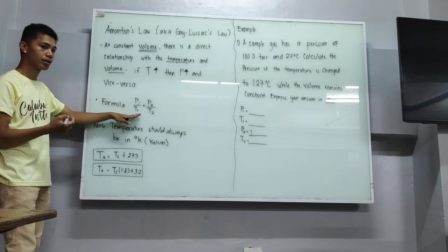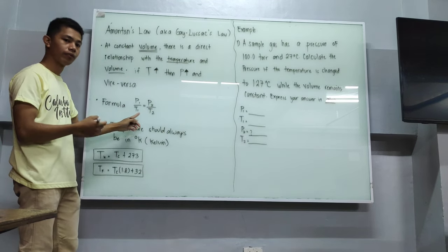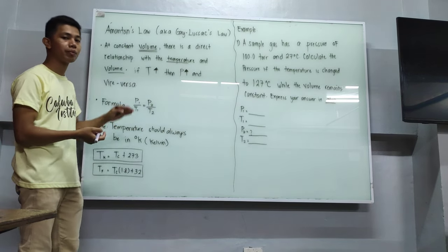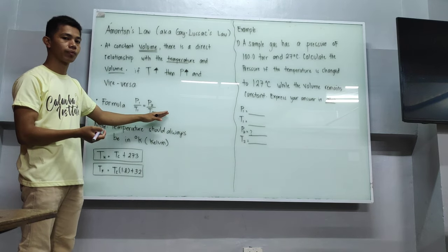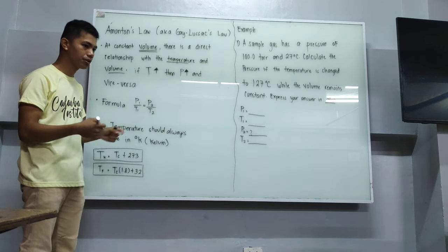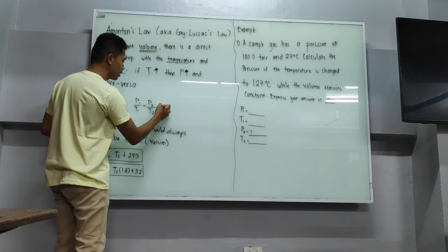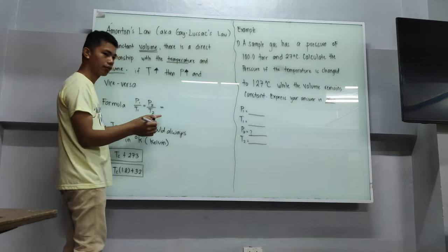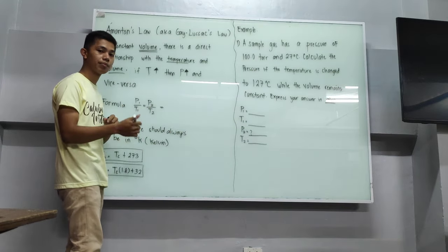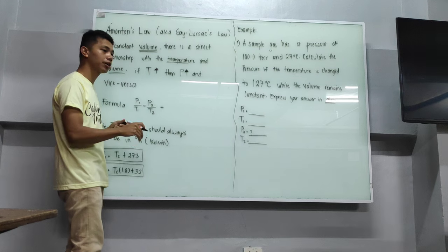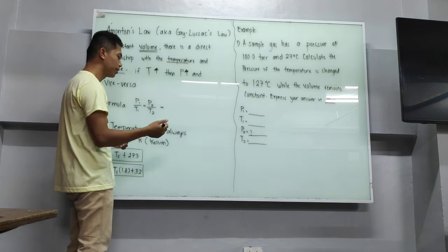So the formula that we will be using in Amontons' Law is P1 over T1 is equal to P2 over T2. In order for us to simplify this, we will convert it into a simpler form in order to derive other formulas.